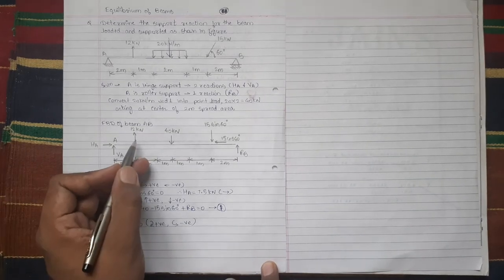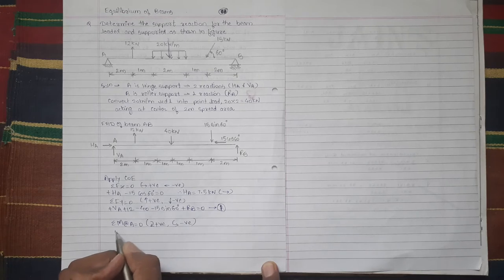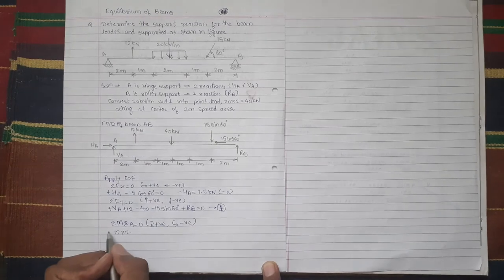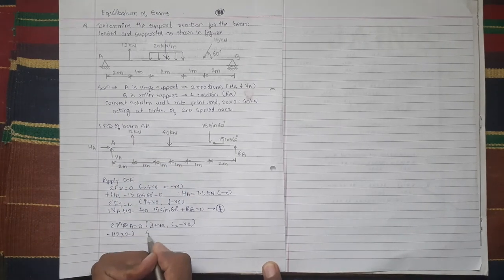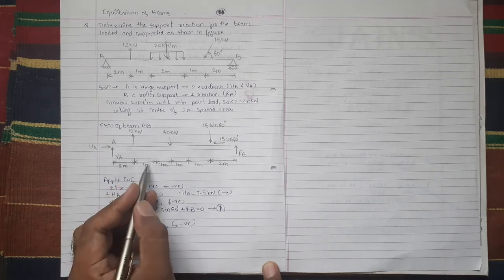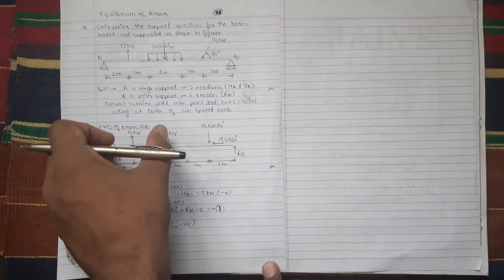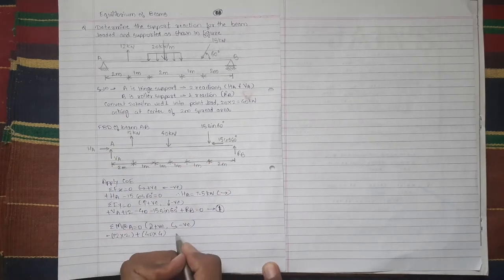This is 12 kN acting at perpendicular distance 2 from A, so 12 into 2. It is going to create anti-clockwise moment about A, so minus. 40 is acting at distance 4 meters. It is going to create clockwise moment about point A, so plus. 15 sin 60...